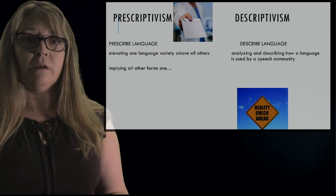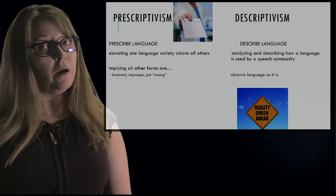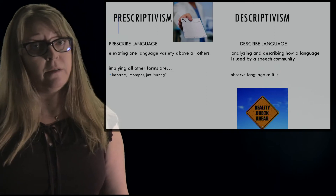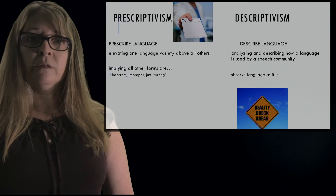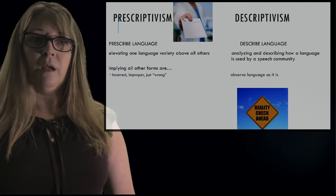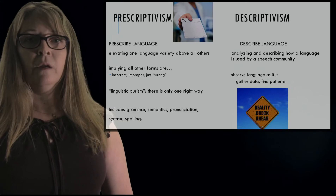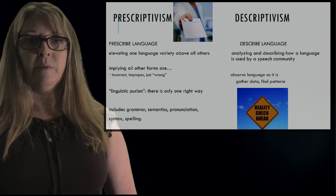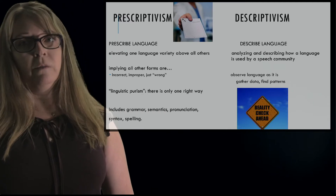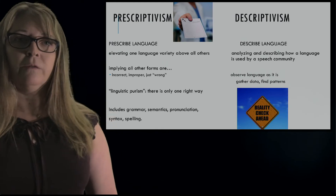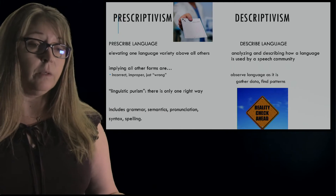Prescriptivism implies all other forms are incorrect, improper — it's just wrong. And descriptivism observes the language as it is, not making that judgment. You gather data, find patterns. Another aspect of prescriptivism is linguistic purism: there's only one right way. All of these include grammar, semantics, pronunciation, syntax, and spelling — which is what we're going to be studying.